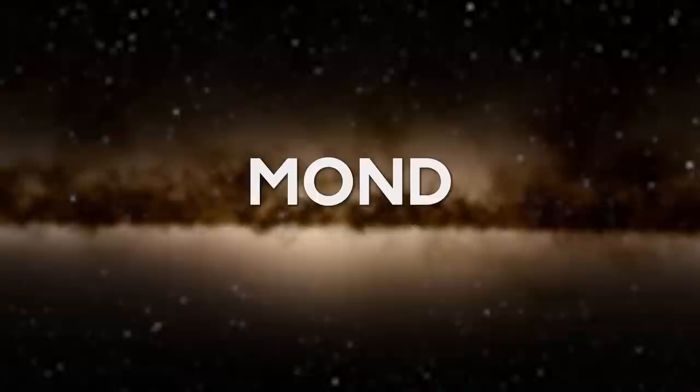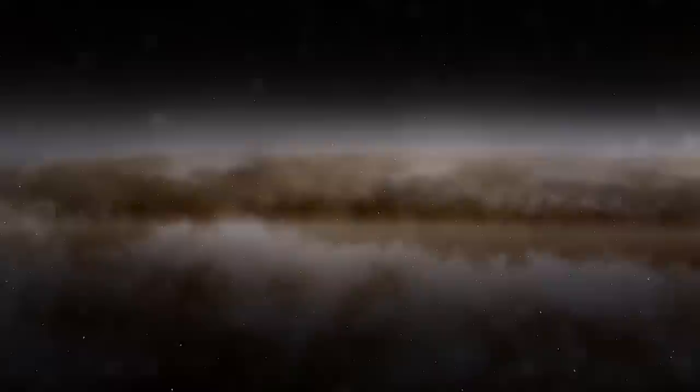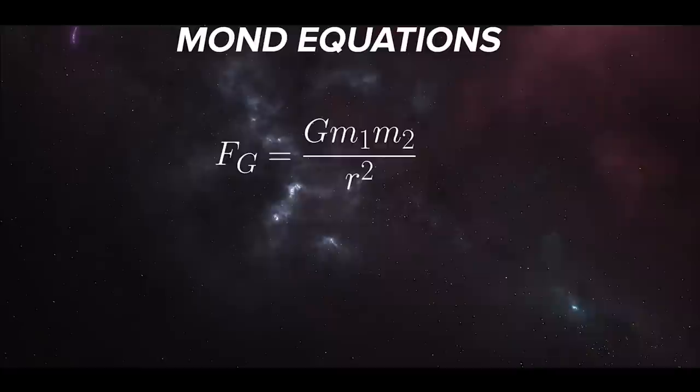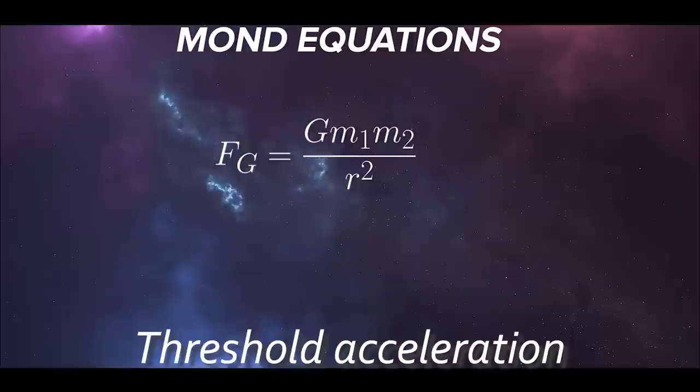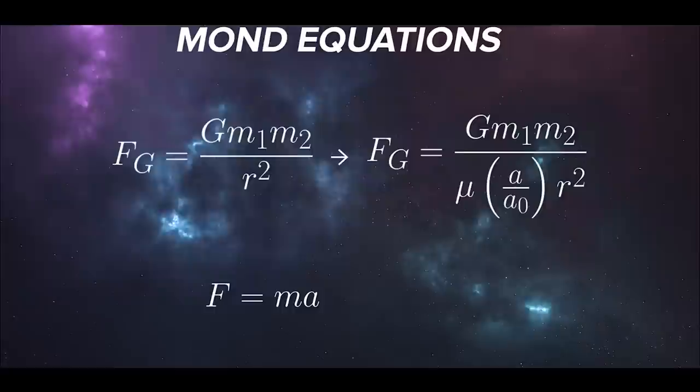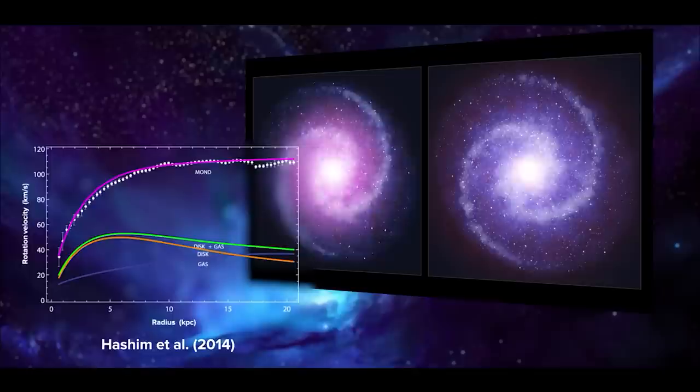The Mond theory, introduced in 1983 by Israeli physicist Mordechai Milgram, suggests that instead of searching for invisible particles like dark matter, we should consider altering our understanding of how gravity functions in regions with extremely low accelerations. Mond recognizes that Newton's laws of gravity, which work well in high acceleration environments like our solar system, may not perfectly describe the dynamics of galaxies and galaxy clusters. A key concept in Mond is the introduction of a threshold acceleration. This threshold marks the point below which gravity begins to behave differently from what classical physics predicts. It's like seeing the rules change when you transition from playing marbles to playing chess. Different games, different rules.